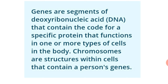Chromosomes are a thread-like structure present in the nucleus of eukaryotic cells. Each chromosome consists of two individual strands called chromatids. The chromatids are joined at a point called the centromere.